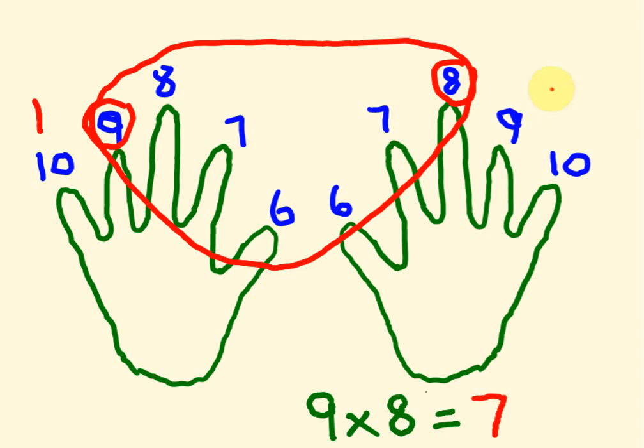Over here we have one. Over here we have two. And we multiply these. One times two is two. Pretty cool, right?